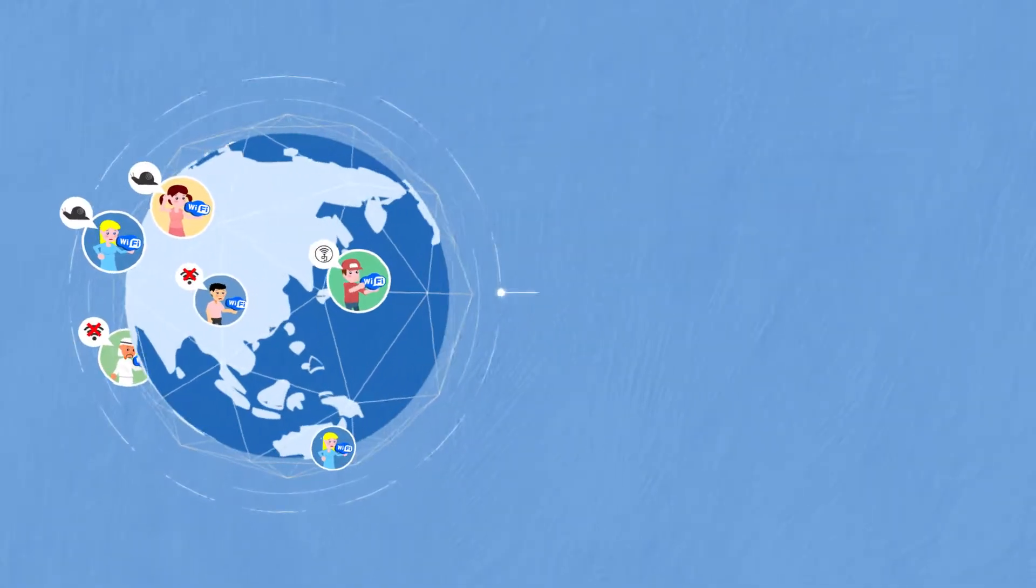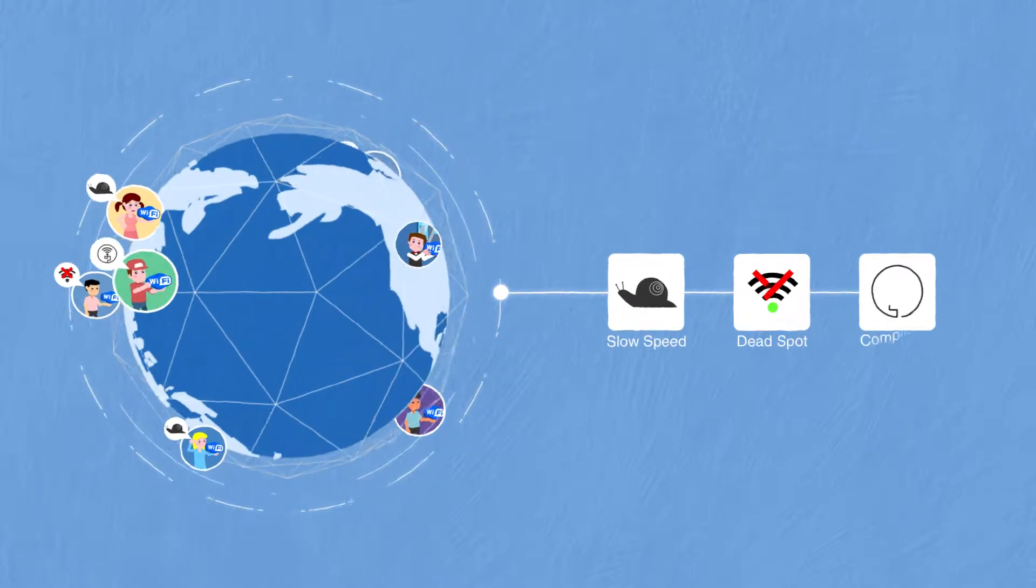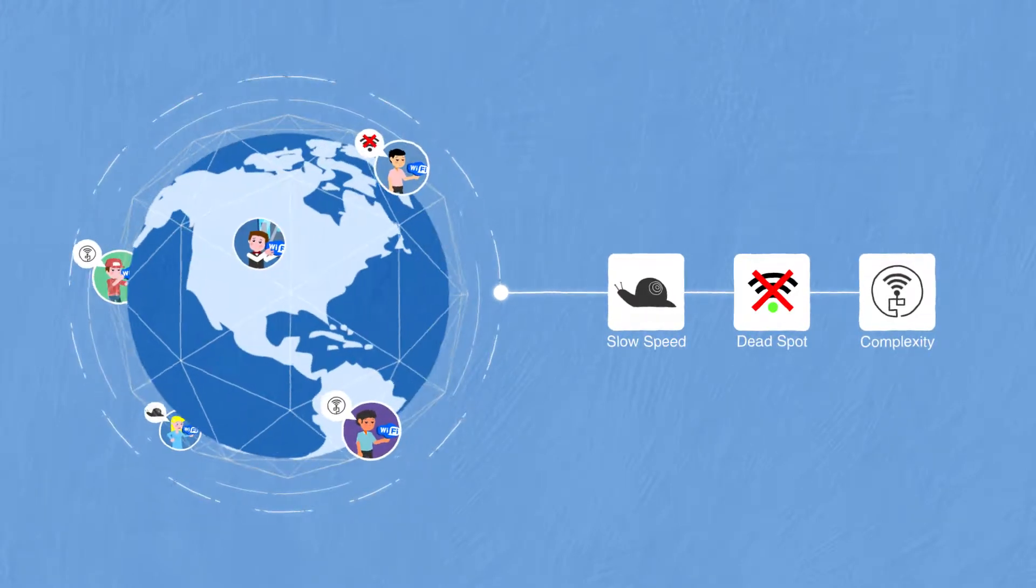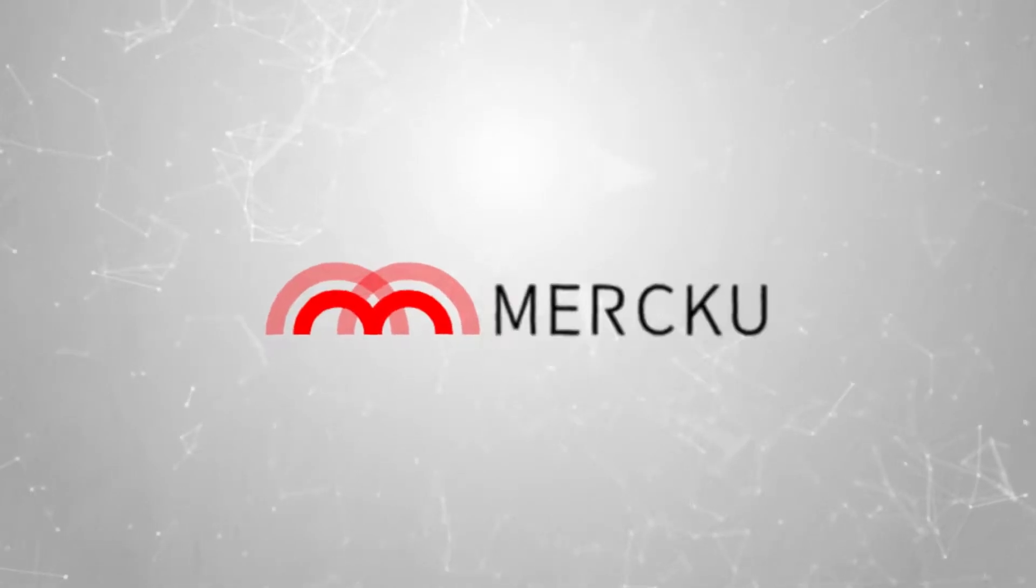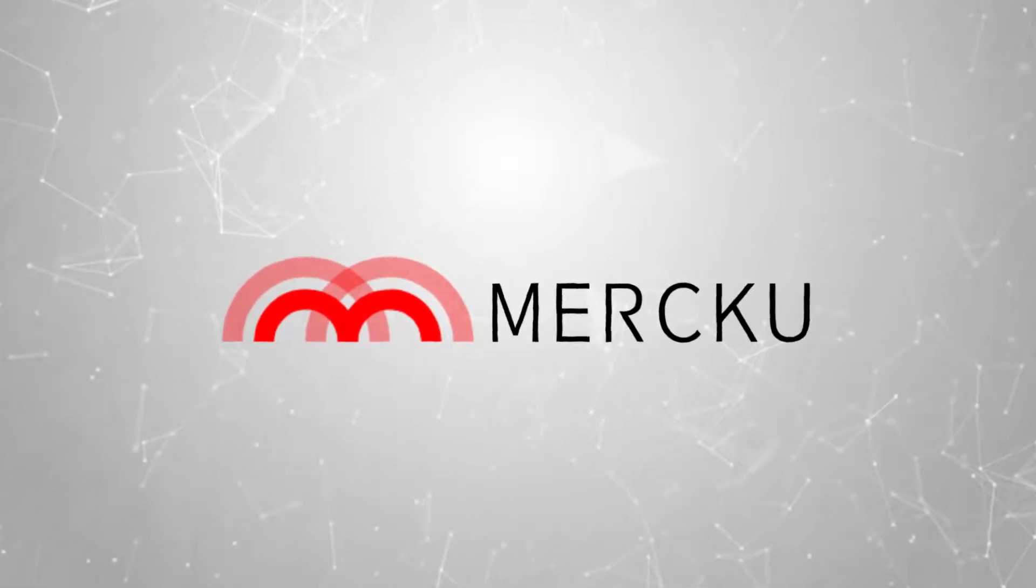The most common complaints are slow speeds, dead spots, and the complexity of managing Wi-Fi in the home. Luckily, we've turned the page on these issues to start a new chapter in the story of Wi-Fi technology, introducing Mesh Wi-Fi.